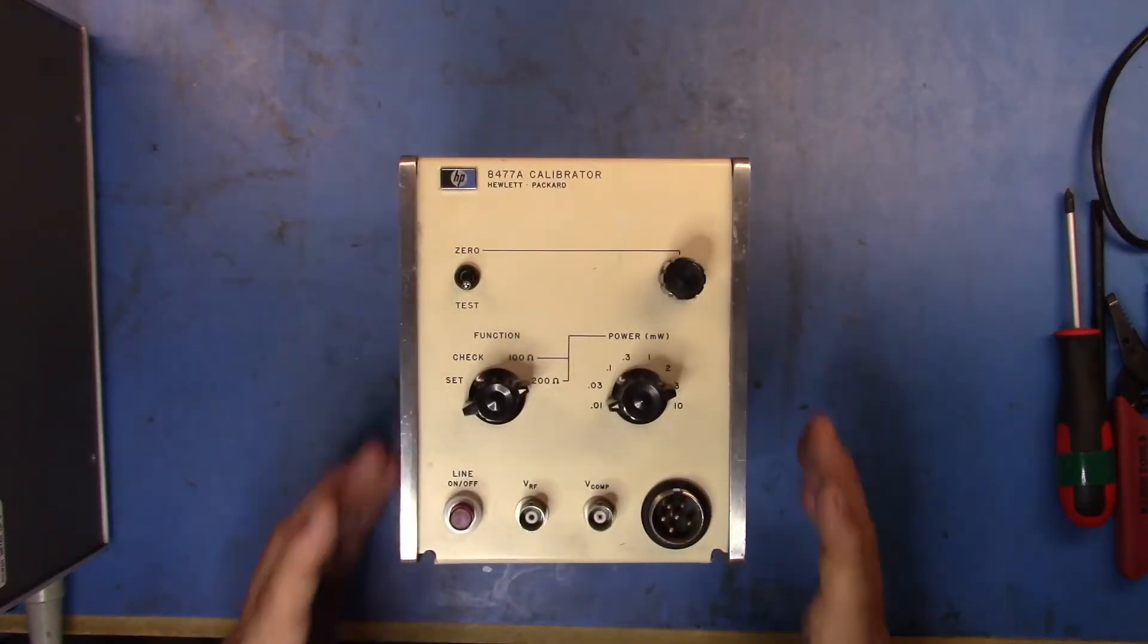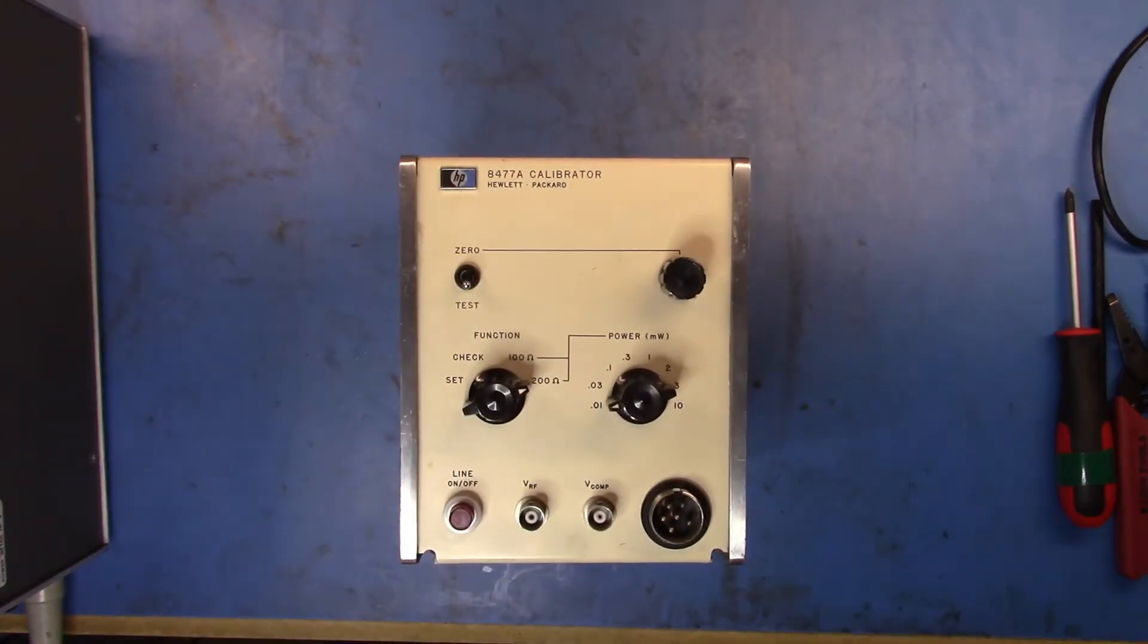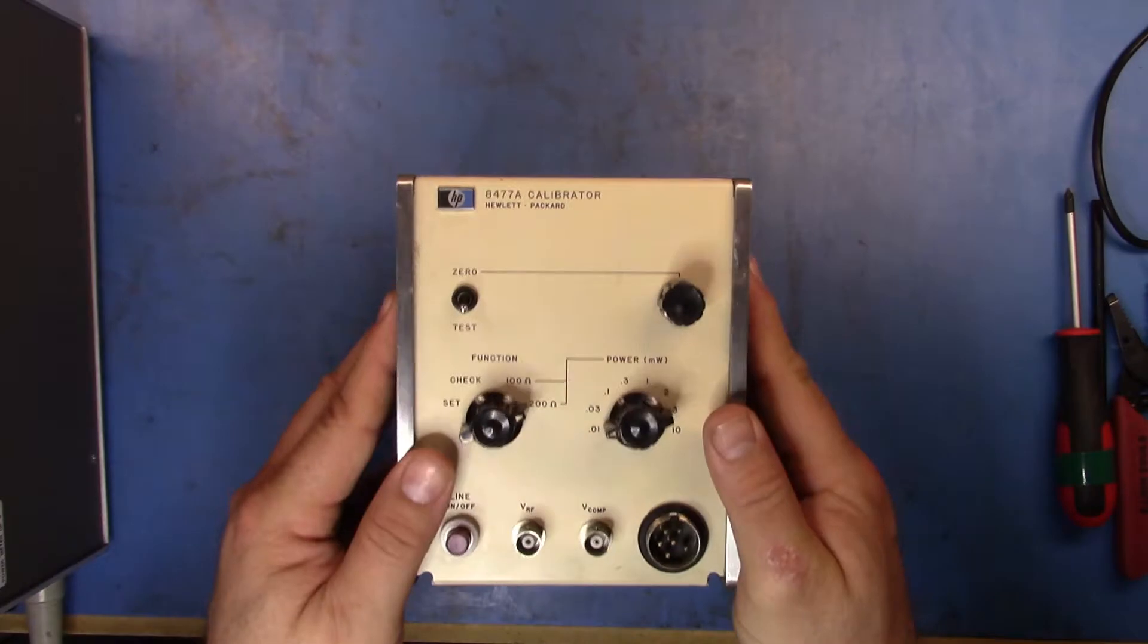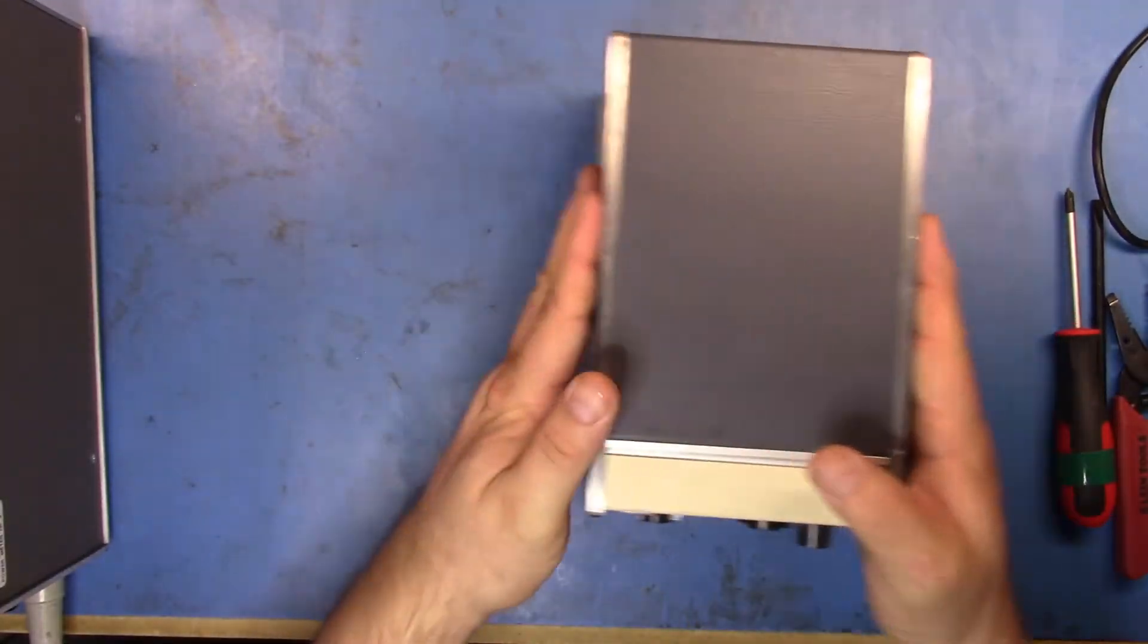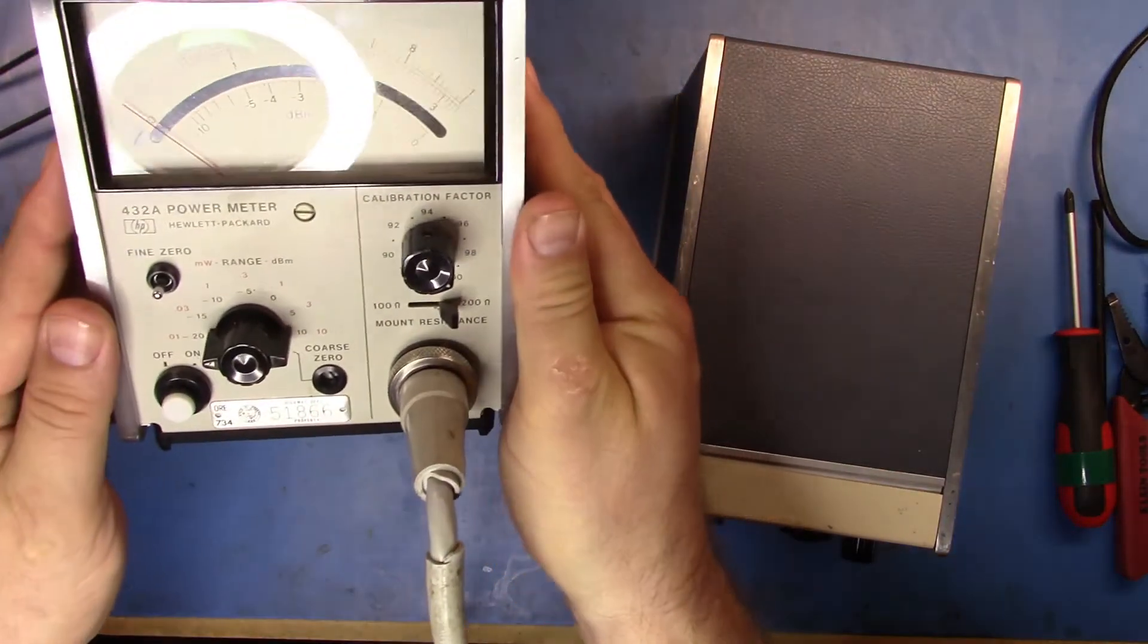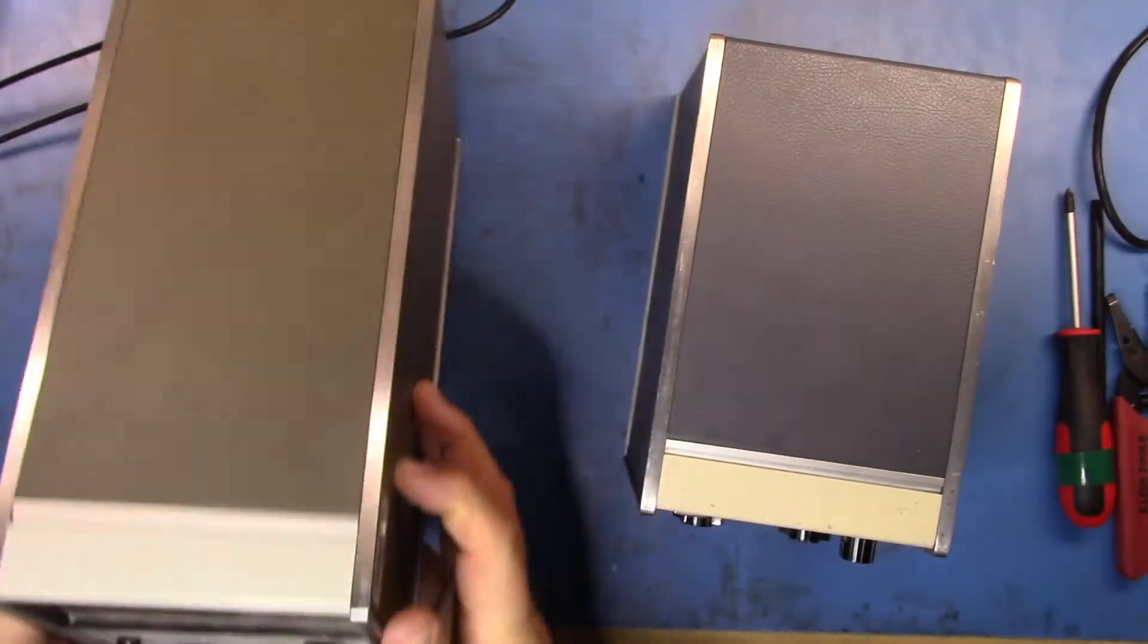Anyway, what is this piece of kit? It is an 8477A calibrator. It is designed specifically to help you calibrate power meters such as the 432A that we see here.